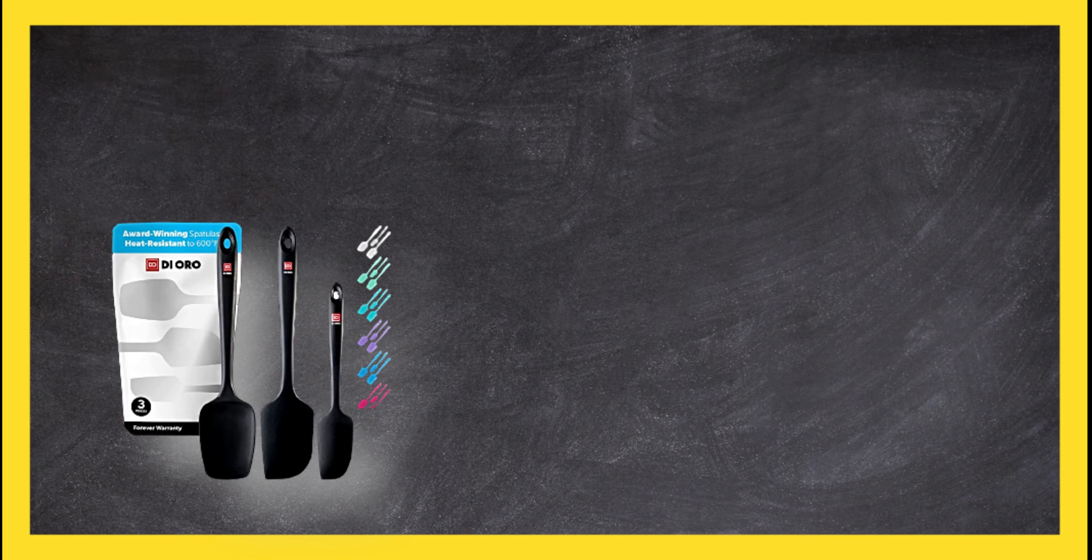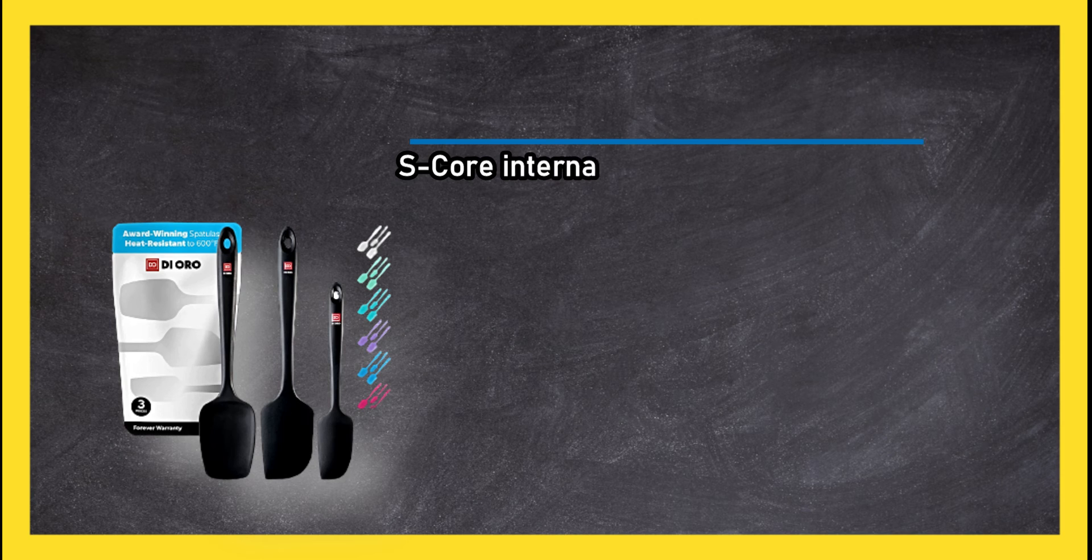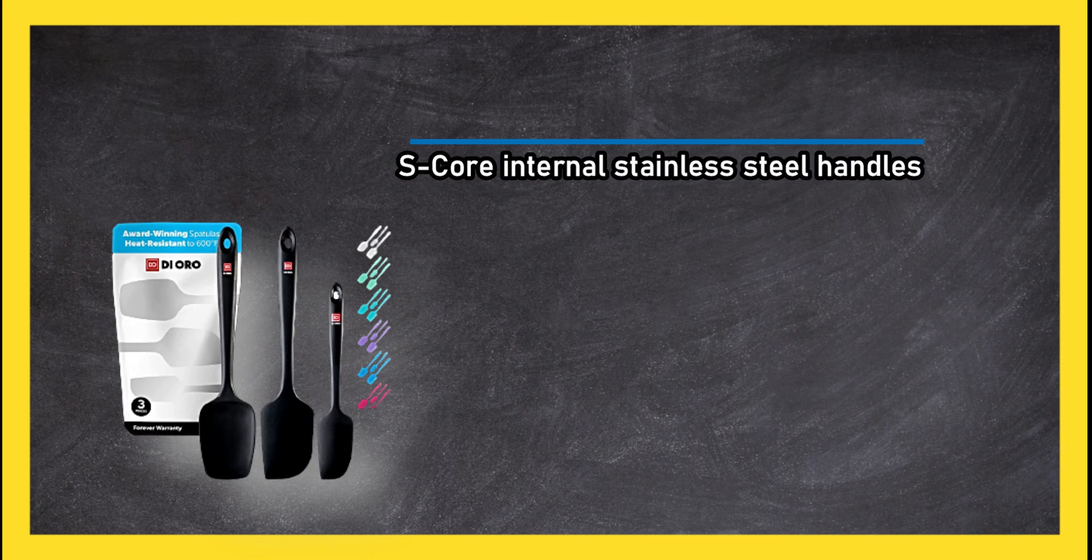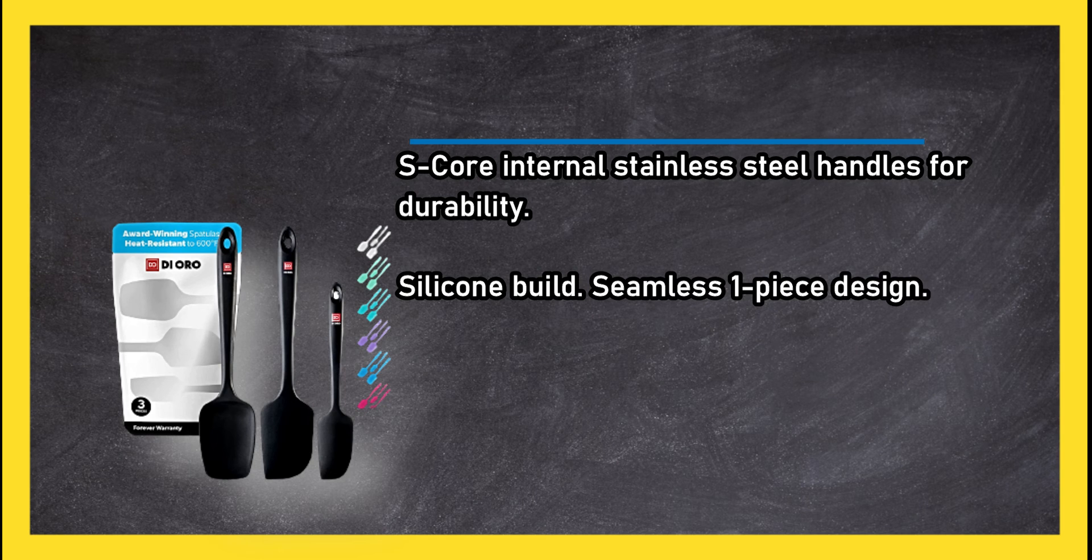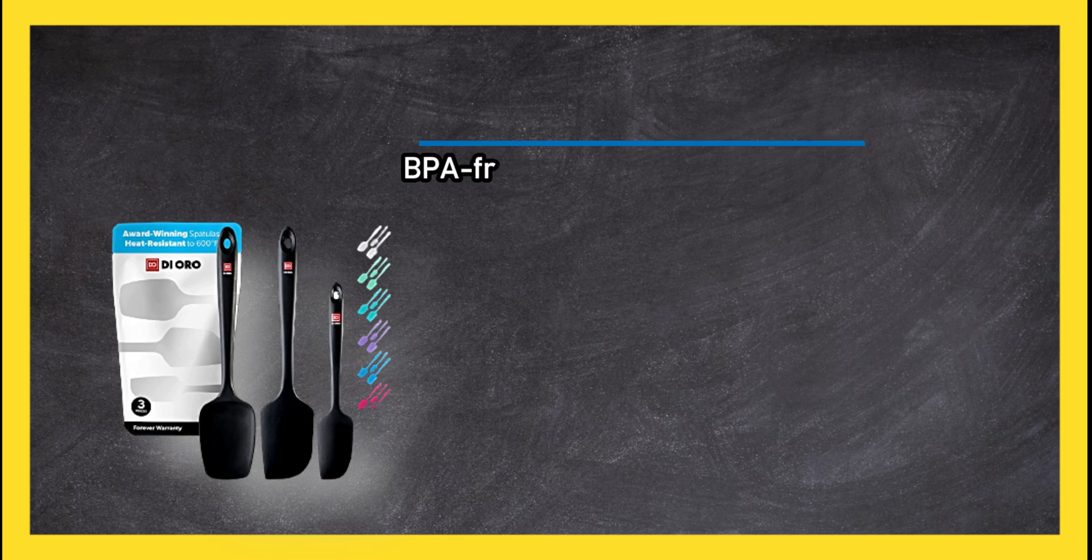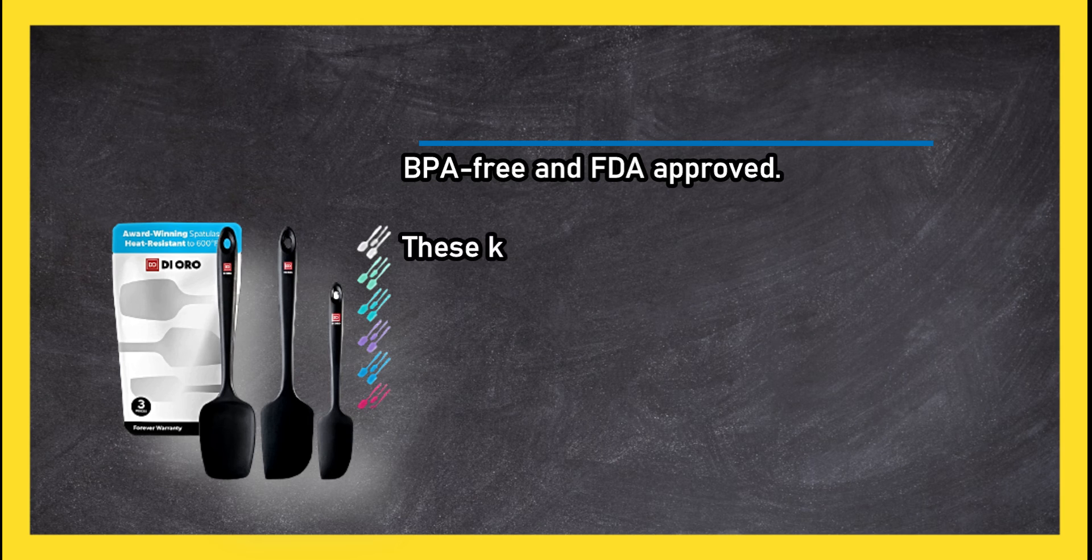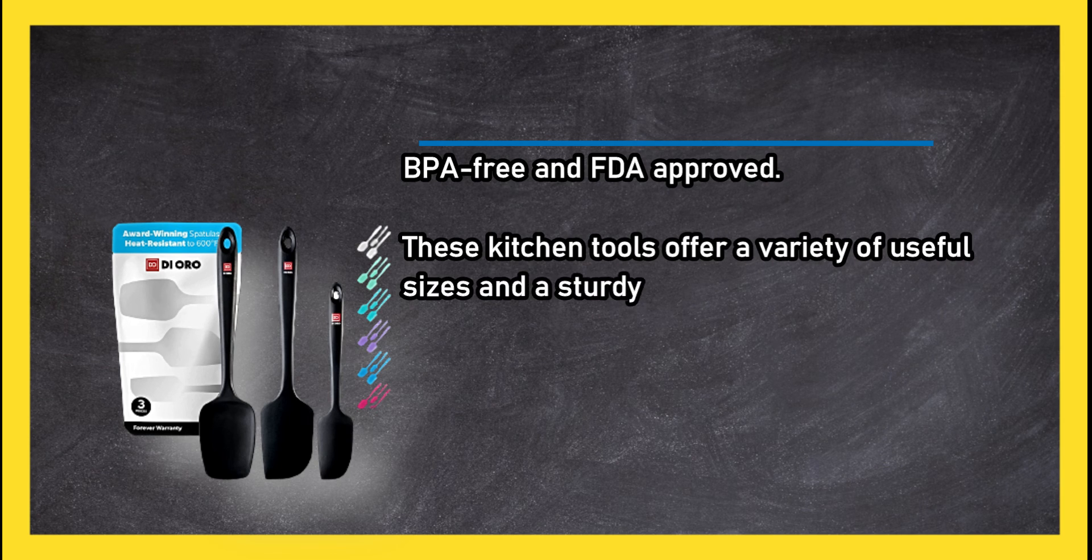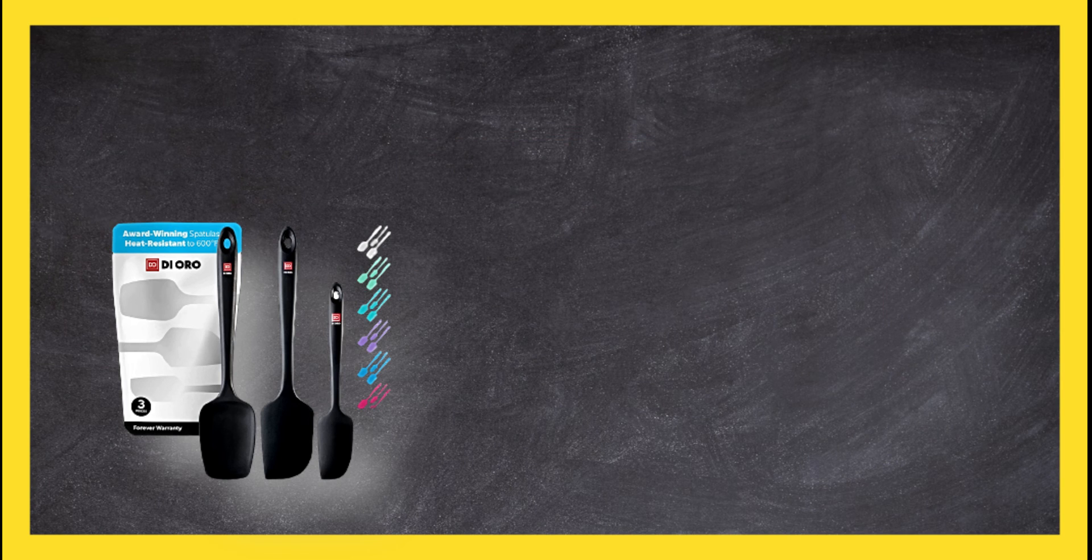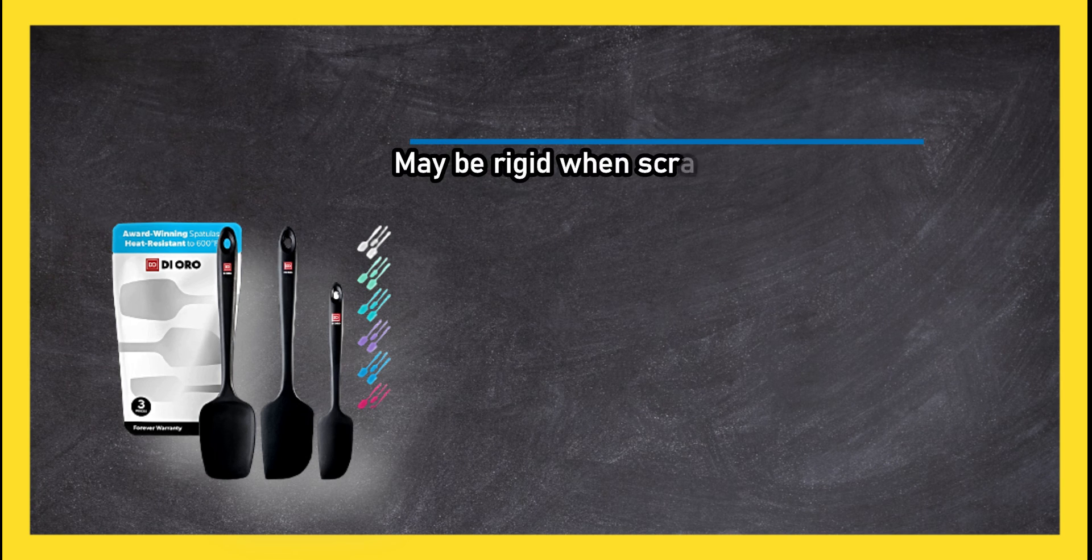Stainless steel core with internal handles for durability. Silicone build, seamless one-piece design, BPA free and FDA approved. These kitchen tools offer a variety of useful sizes and a sturdy design. May be rigid when scraping bowls and jars.